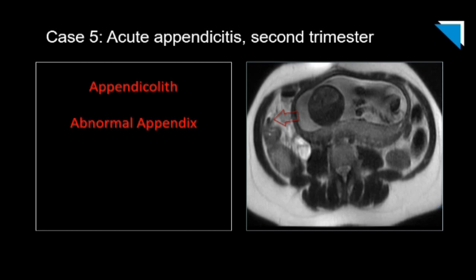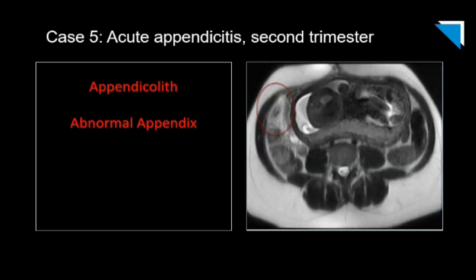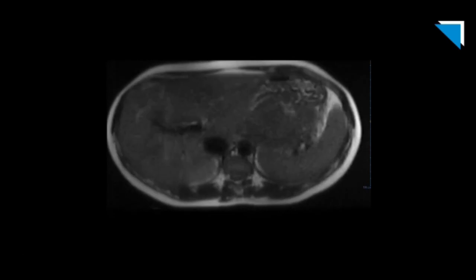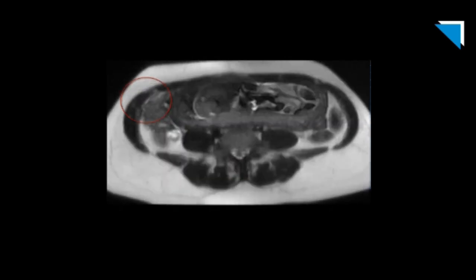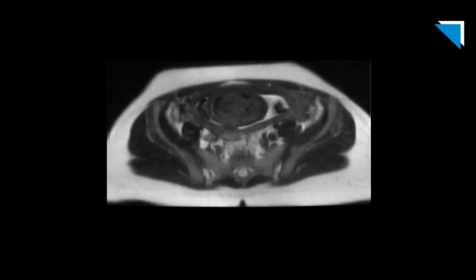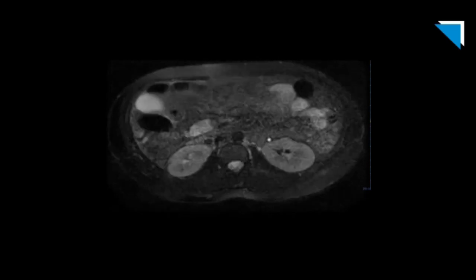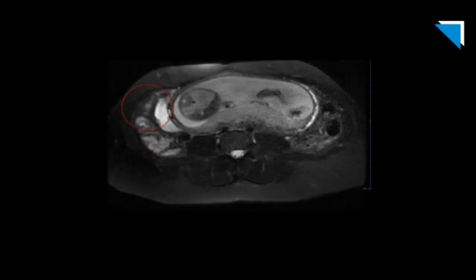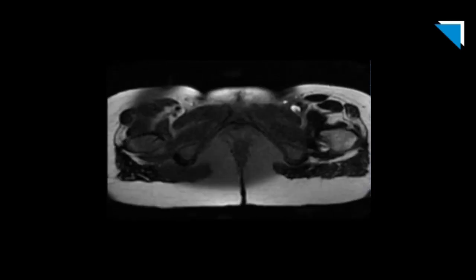Another example of acute appendicitis in the second trimester. Here we actually see a low T2 signal at the base of the appendix, with the remainder of the appendix fluid-filled and distended with adjacent edema — another classic acute appendicitis. Here's the axial cine clip of T2-weighted images and the fat-suppressed T2-weighted image.